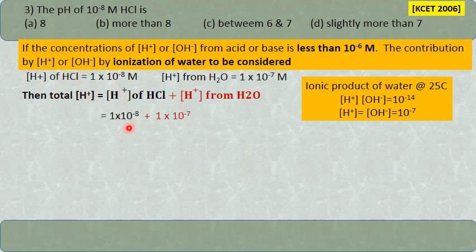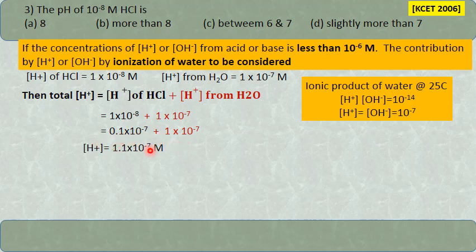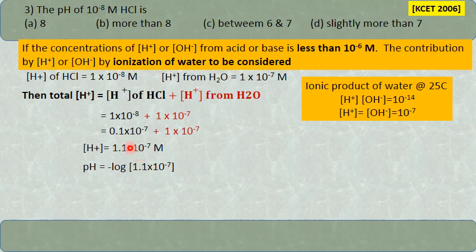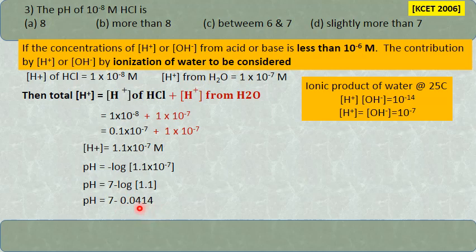Total hydrogen ion = H⁺ from HCl + H⁺ from water = 1×10⁻⁸ + 1×10⁻⁷ = 0.1×10⁻⁷ + 1×10⁻⁷ = 1.1×10⁻⁷ mol. That is the total hydrogen ion concentration. pH = −log(1.1×10⁻⁷) = 7 minus log(1.1). Log 1.1 = 0.0414, so pH = 6.9586, approximately between 6 and 7.